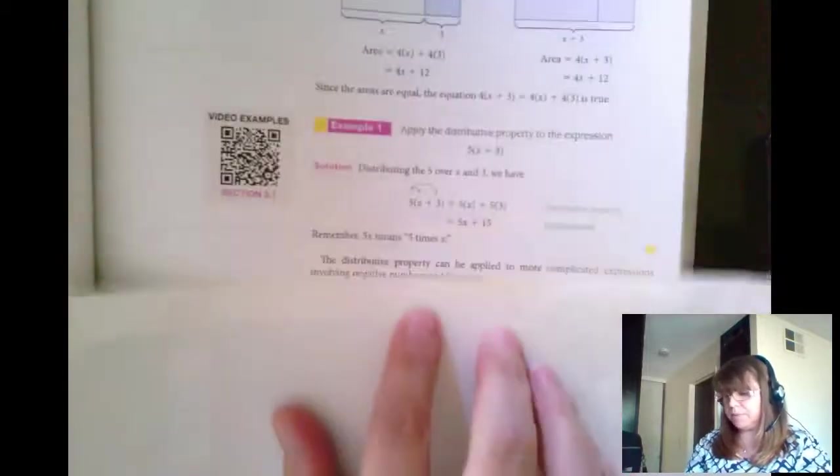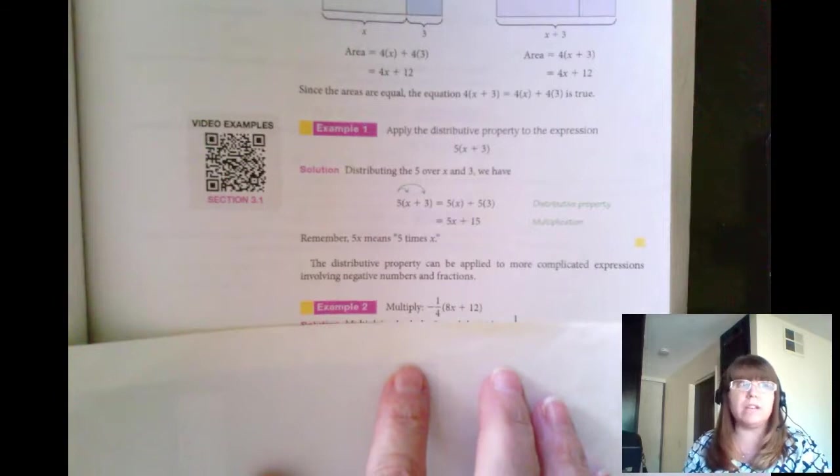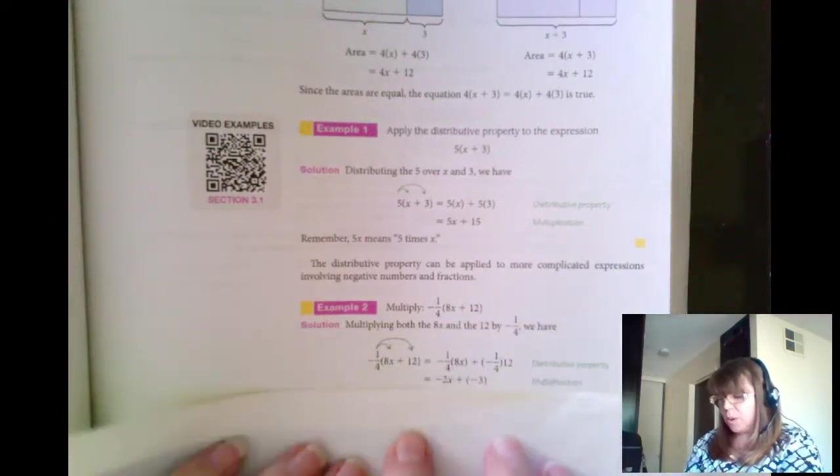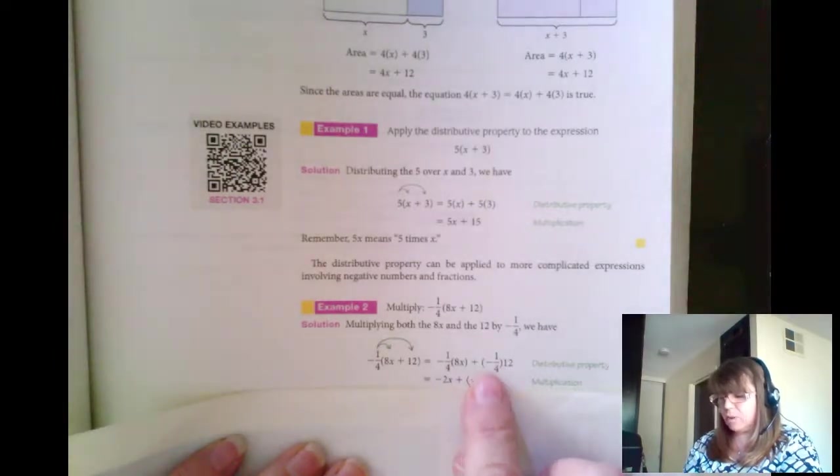Let's take another example. I'm going to multiply negative 1 quarter times the quantity 8x plus 12. So I'm going to multiply both the 8x as well as the 12 by the negative 1 fourth. So negative 1 fourth times 8x is negative 2x. Negative 1 fourth times 12 is negative 3.